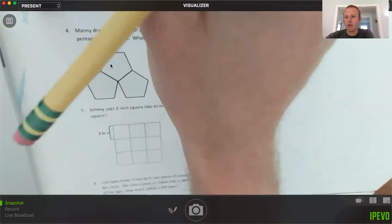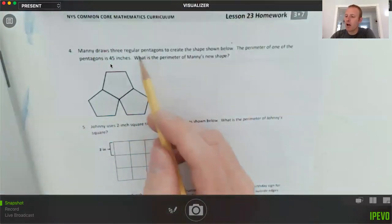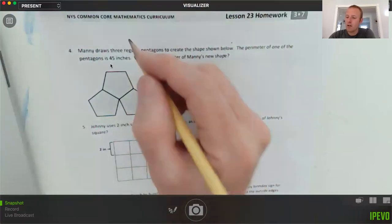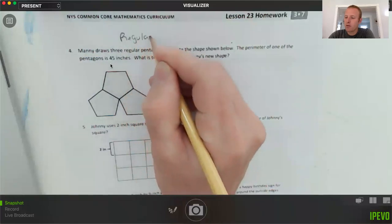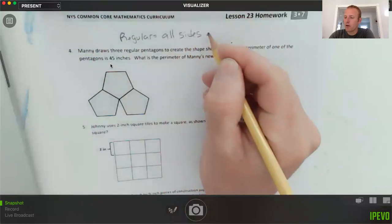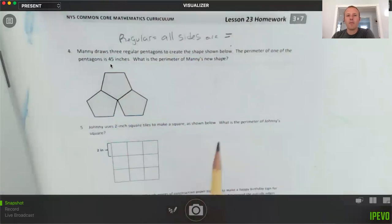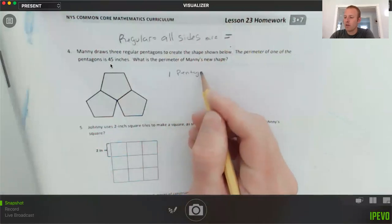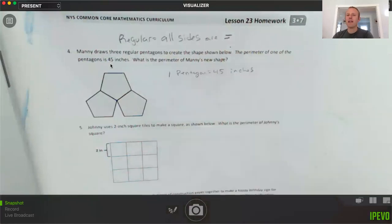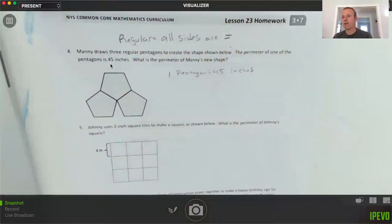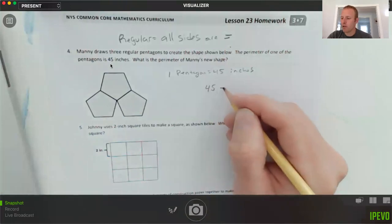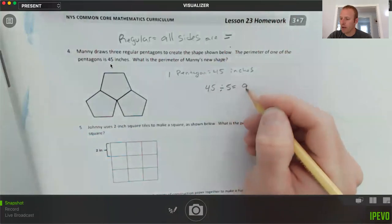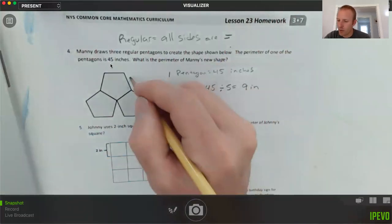Alright, here we go. We're getting a little bit more complicated as we go with these. Manny draws three regular pentagons—sorry, three regular pentagons. So regular meaning all sides are equal. So he creates a shape. The perimeter of one pentagon is 45 inches. So one pentagon. Think to yourself, why do they give us that information? It's a regular pentagon and the perimeter is 45 inches. Well, they do that because that way we can figure out what each side is.